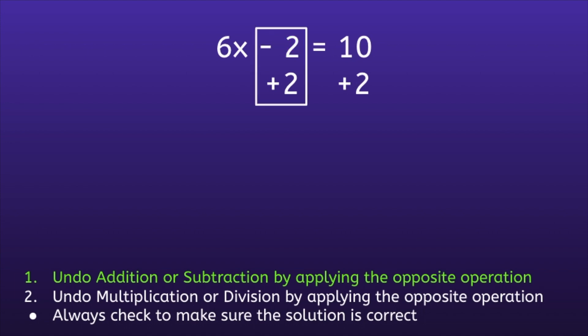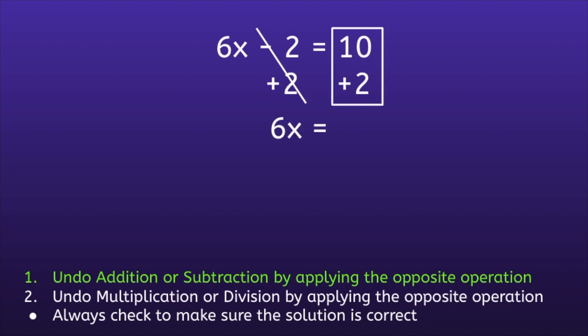If we focus in on the left, we have a negative 2 plus positive 2. Since those are opposite numbers, they will cancel out and equal 0, which leaves me with 6x on the left side. And if I focus on the right side, I have 10 plus 2, and 10 plus 2 is equal to 12.